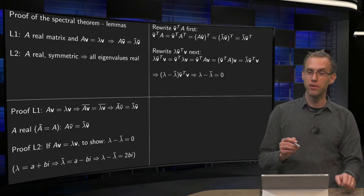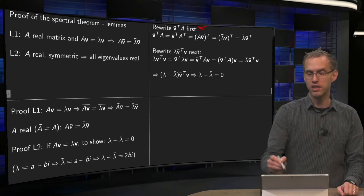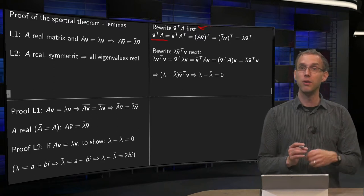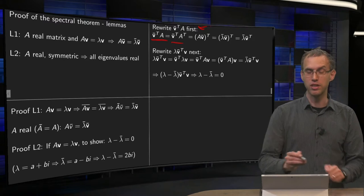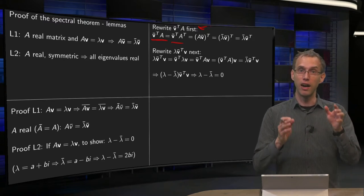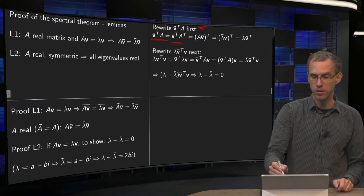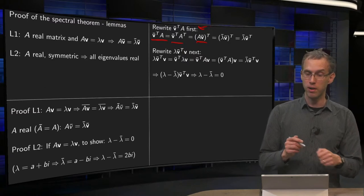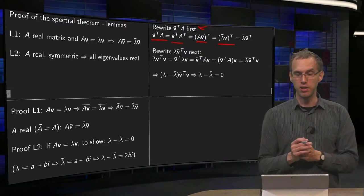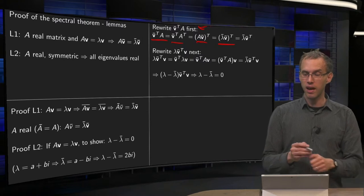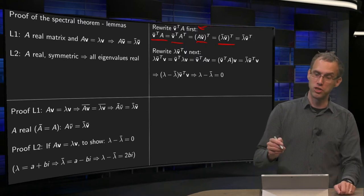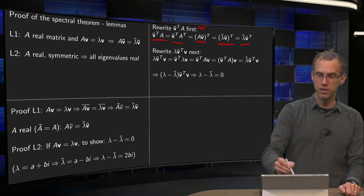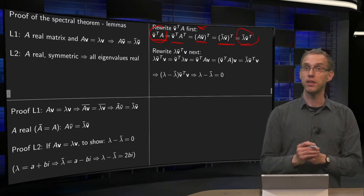We do a few steps for that. First, we are going to rewrite the quantity V-bar-transpose times A. Using A symmetric, so A equals A-transpose, we get V-bar-transpose times A-transpose. Then since the transpose of a product is the transpose of the factors in reverse order, this equals the transpose of A times V-bar. We can compute A times V-bar, which equals lambda-bar times V-bar by Lemma 1, so taking the transpose gives lambda-bar times V-bar-transpose. That is the first step: we can write V-bar-transpose times A as lambda-bar times V-bar-transpose.